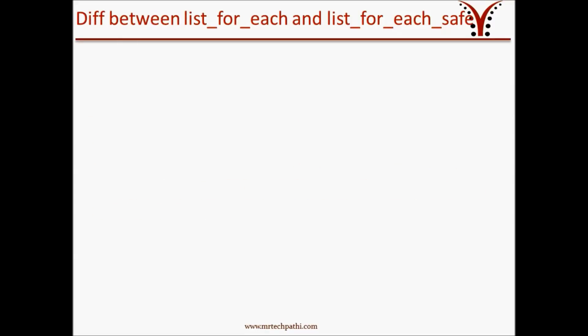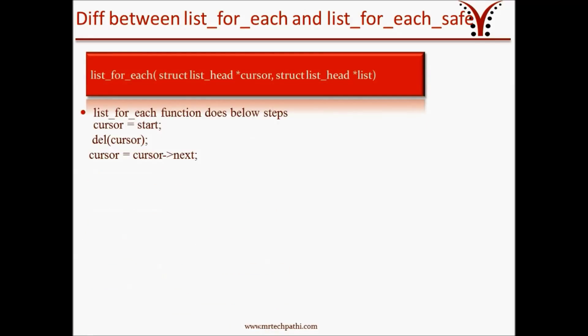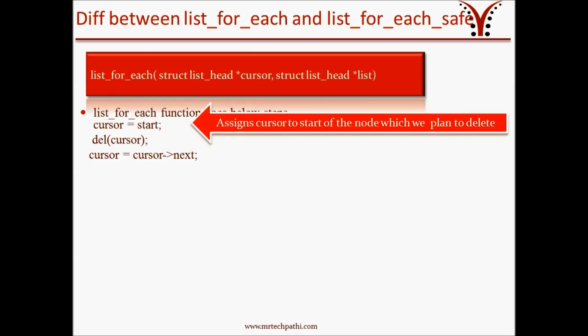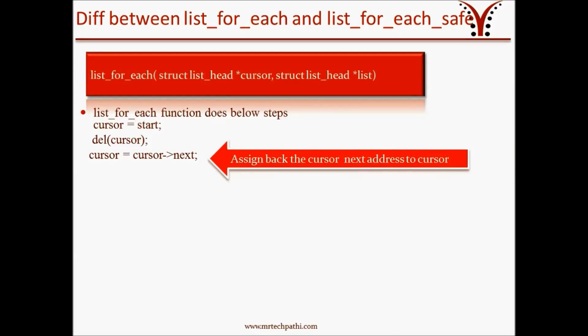Let's discuss the difference between list_for_each and list_for_each_safe macro, specifically how each handles the situation when we want to delete a node in the list. The list_for_each function does the following: it assigns a temporary pointer cursor to the start of the node which we plan to delete, it deletes the cursor node where cursor_next is also deleted, then assigns back the cursor_next address to the cursor.